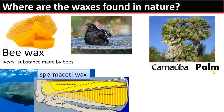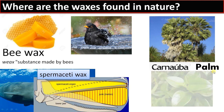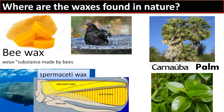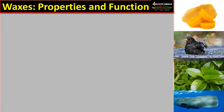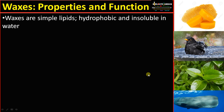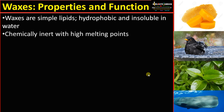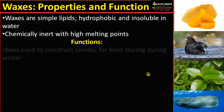There is also a waxy coating on plant leaf surfaces, often forming the cuticle. Now, moving into properties and functions: waxes are simple lipids. They are hydrophobic and insoluble in water, as they contain many C-H bonds. They are chemically inert with high melting points.